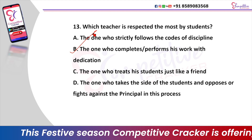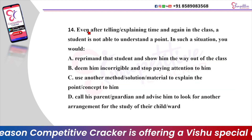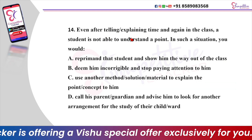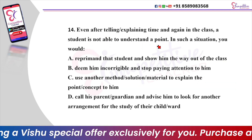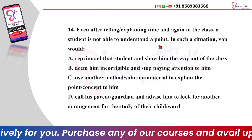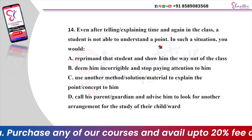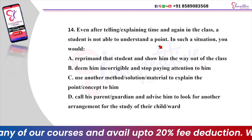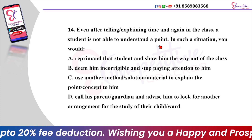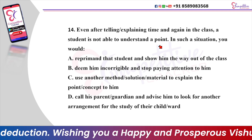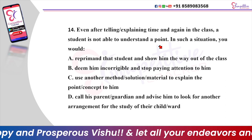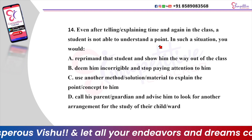Next question. Even after explaining time and again in class, a student is not able to understand a point. In such a situation you would: Option A, reprimand that student and show him the way out of the class. Option B, deem him incorrigible and stop paying attention to him. Option C, use another method or solution material to explain the concept to him. Option D, call his parent or guardian and advise them to look for another arrangement for their child's study. And the right answer is Option C.